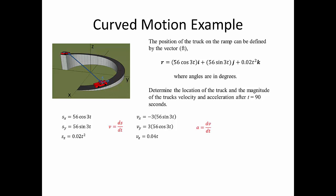The acceleration is the derivative of the velocity with respect to time. Taking derivatives of our velocity components gives the component accelerations. The acceleration in the x direction becomes -9·56·cos(3t), in the y direction it becomes -9·56·sin(3t), and in the z direction the acceleration is 0.04.